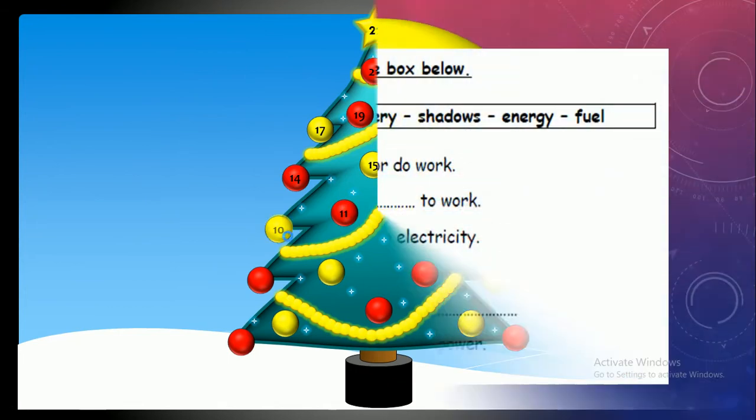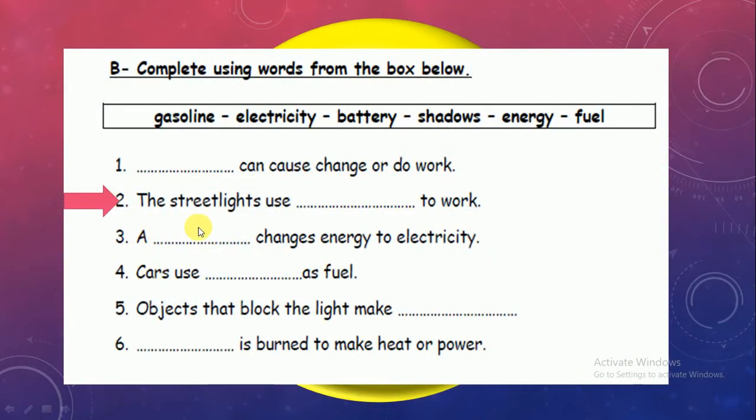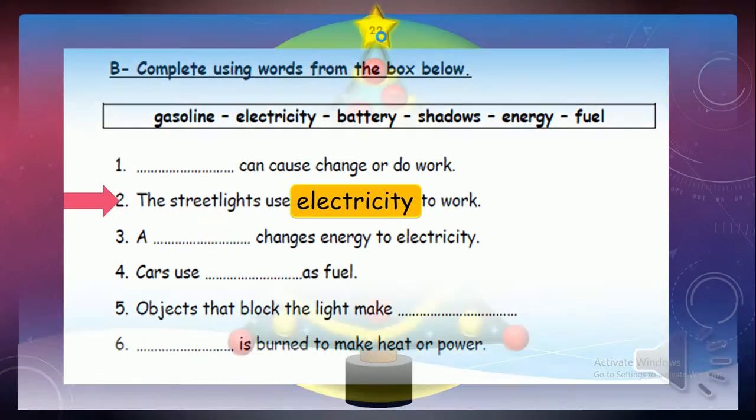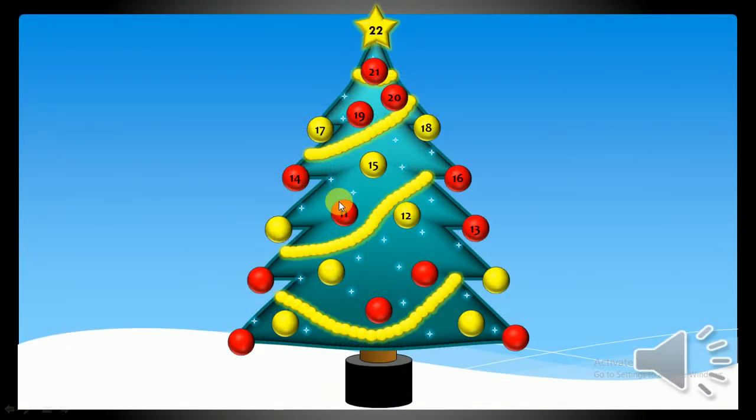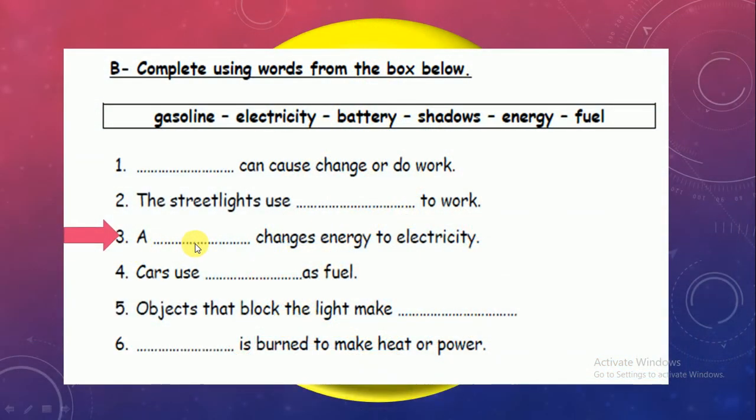Number 10. The street lights use what to work? Use gasoline or electricity? Electricity, good job. Number 11. A, what changes energy to electricity? Do you remember? It stores energy. So it's batteries, stores energy and it changes it into electricity. Good job.